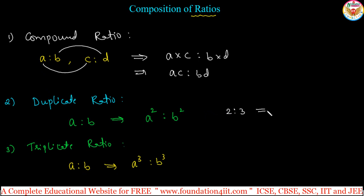if it is 2 is to 3, then 2 square is to 3 square, that is 4 is to 9 is the duplicate ratio of 2 is to 3. Same way if it is 2 is to 3, that is 2 cube is to 3 cube, that is 8 is to 27 is the triplicate ratio of 2 is to 3.